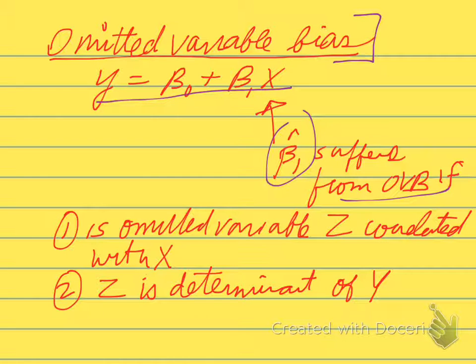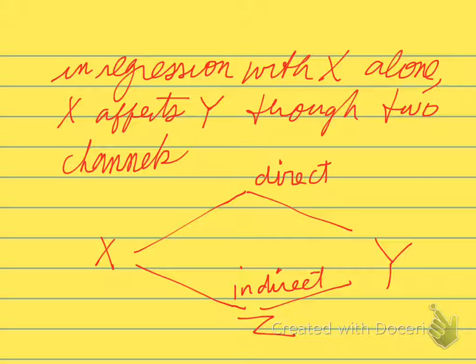That is, our estimate of the coefficient is biased if, and there's two conditions for omitted variable bias: if there is an omitted variable z that's correlated with x, and z is a determinant of y. Those are the two conditions for omitted variable bias.